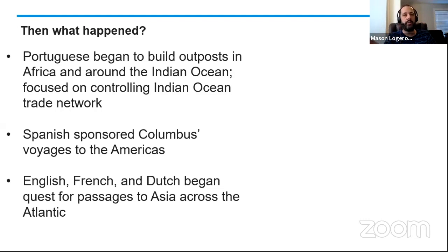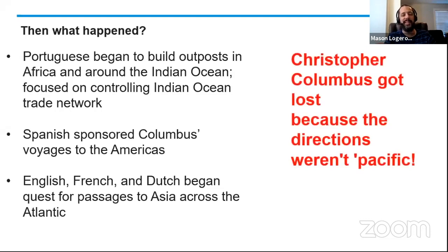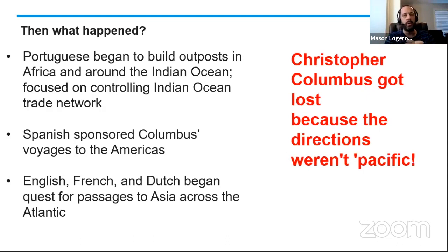Then we have the Spanish hiring Christopher Columbus to find a new water route to Asia through the Atlantic Ocean. Columbus was looking for a western route to Asia but instead discovered the Americas. After the discovery of the Americas, you start to see the English, French, Dutch, and others begin their own explorations, looking for possibly a northwest passage — maybe a way to go around the Americas to the north to reach China. Of course they don't find it, but you do see these countries beginning to settle their own colonies in North America as well.